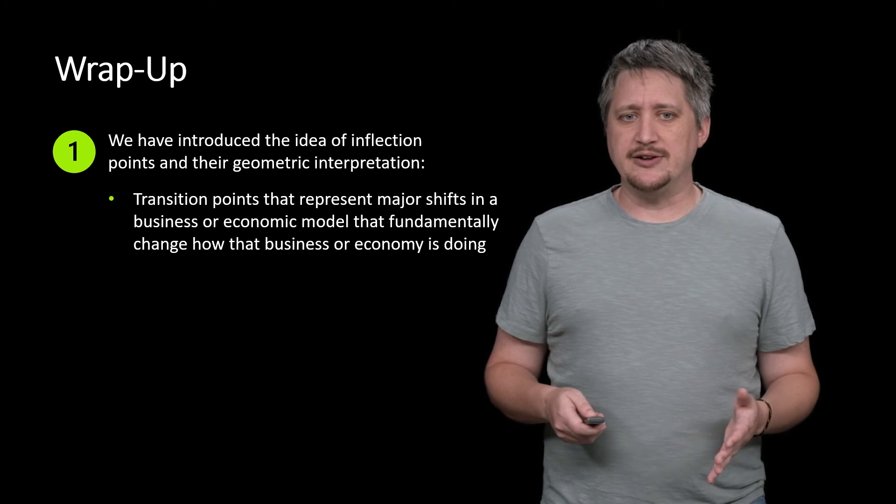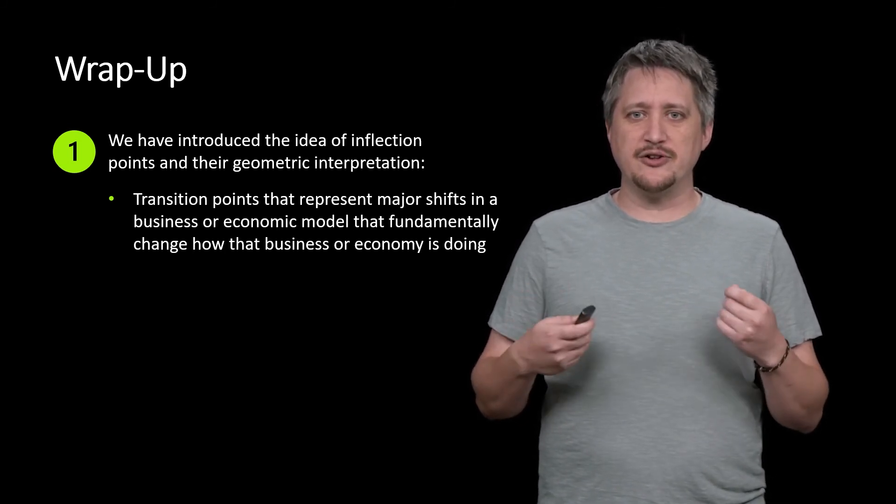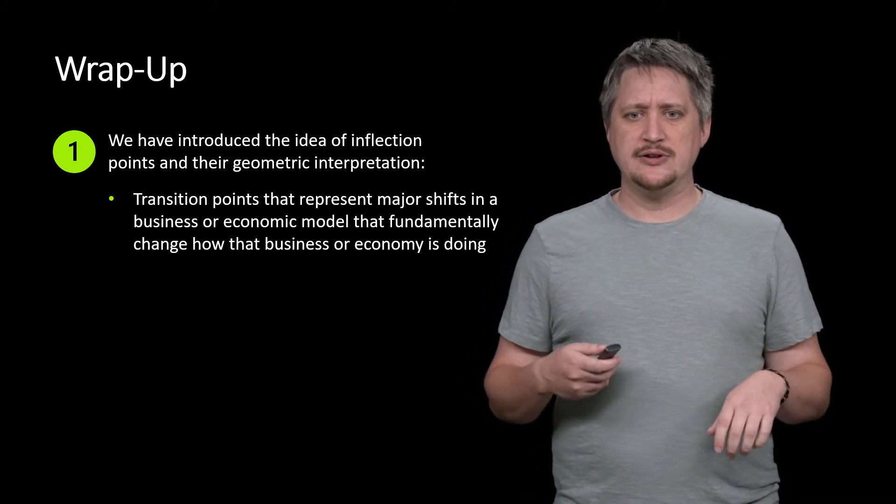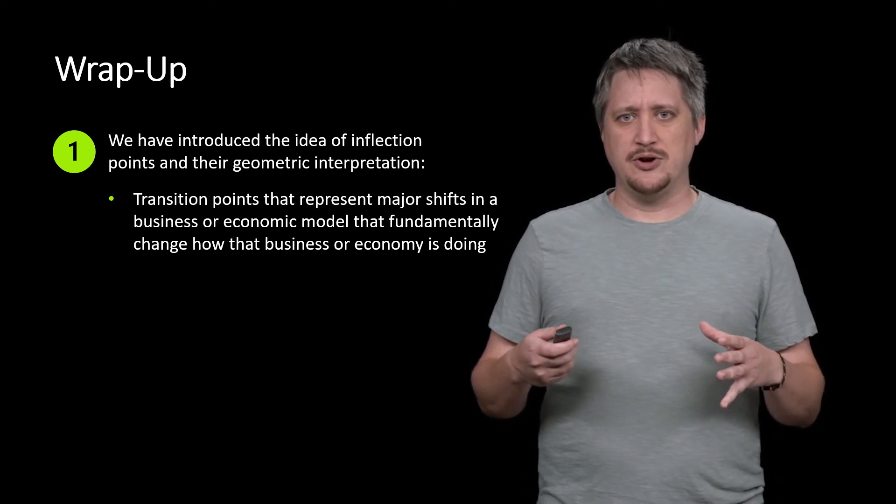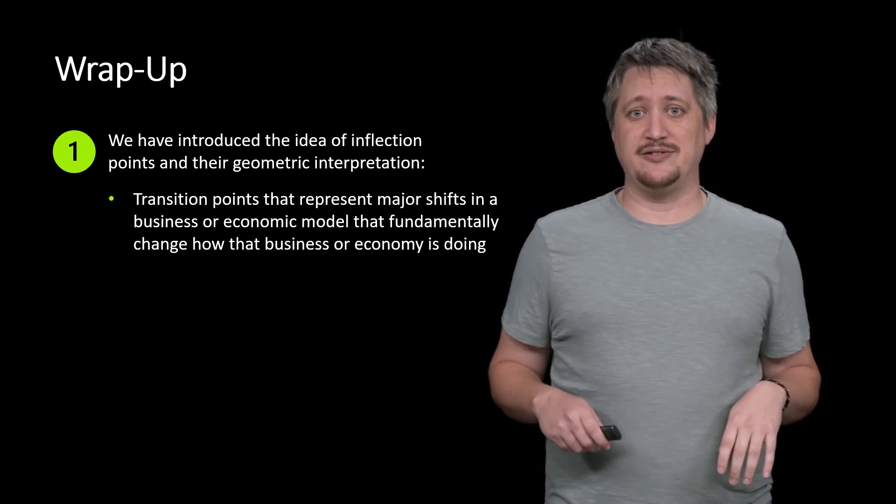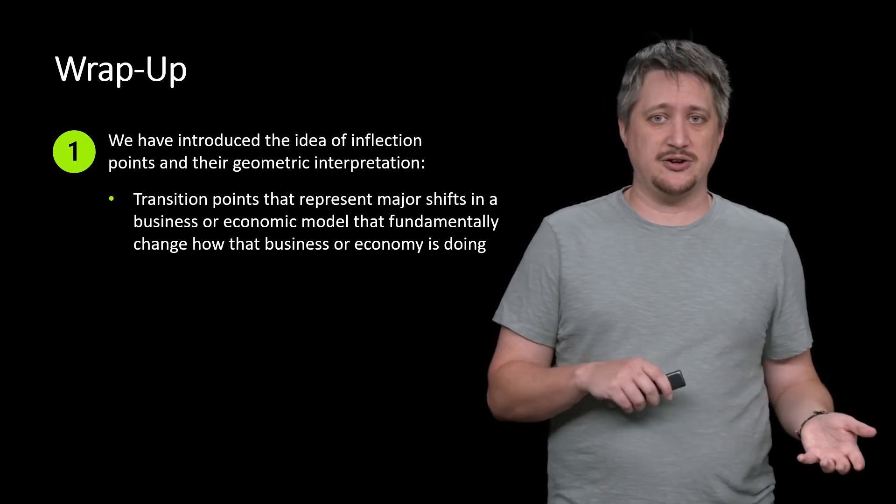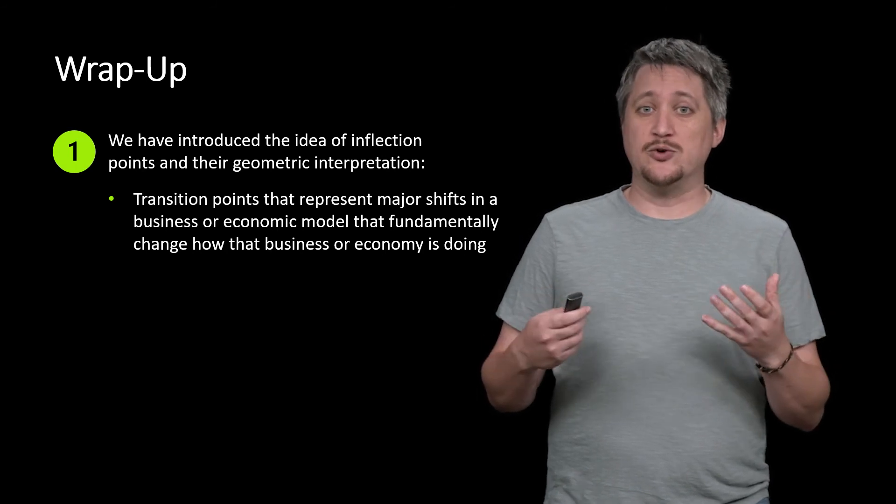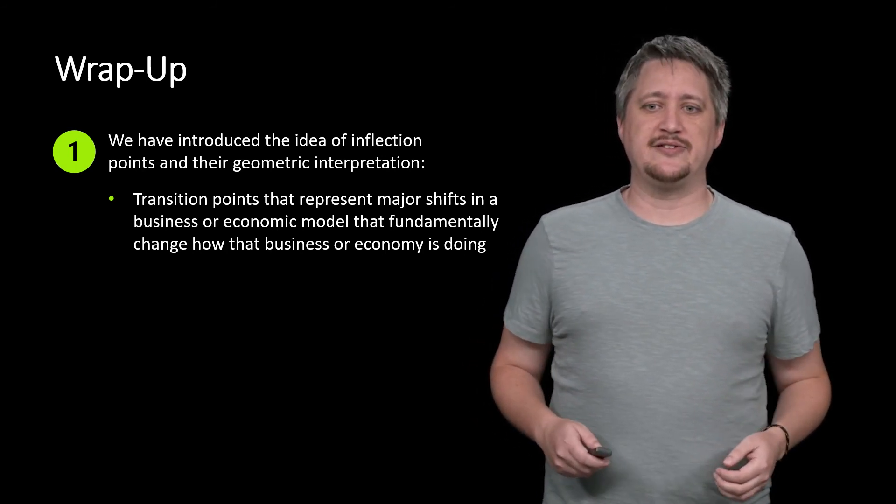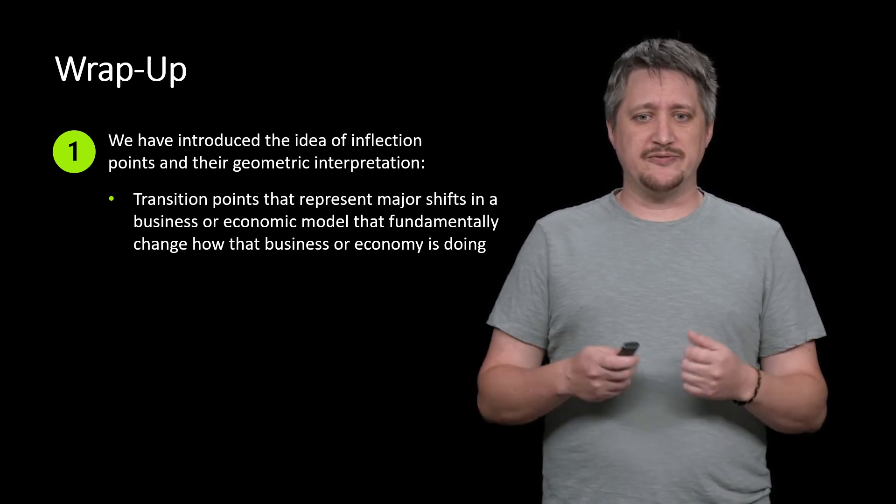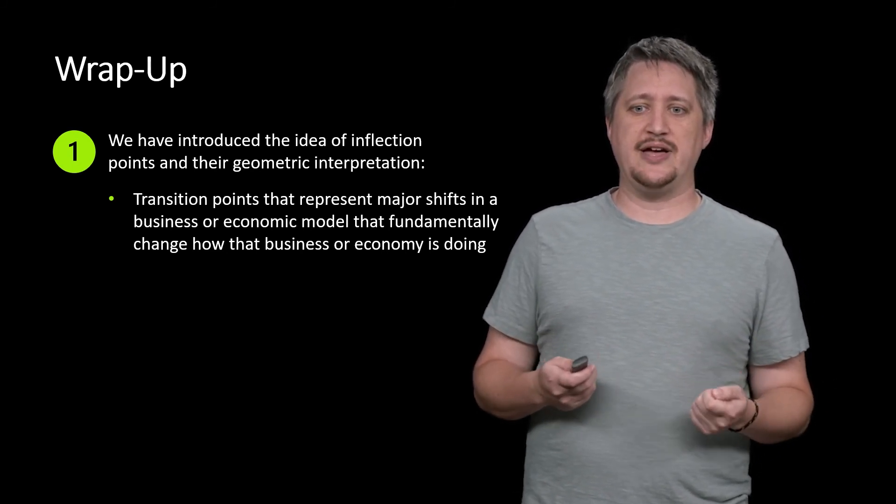All right. So what do we do? So we've introduced this idea of an inflection point, which seemed artificial at first. We landed it some geometric interpretation. So on the one hand, we can think of it as this concavity shift. We're going from concave up to concave down or concave down to concave up. But a more real world way of thinking about these things is that they represent these major shifts in a business or economic model that fundamentally change how that thing is doing.